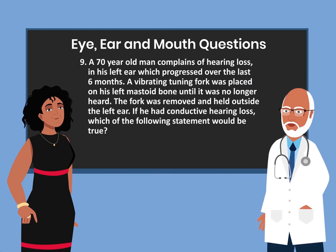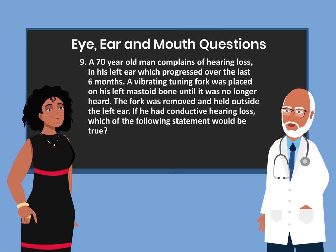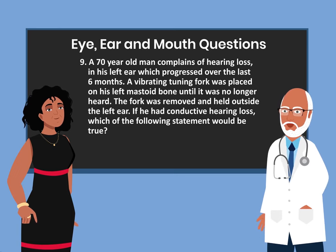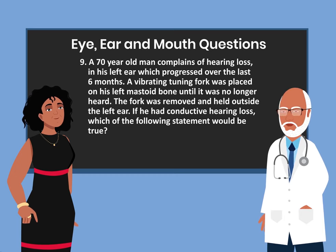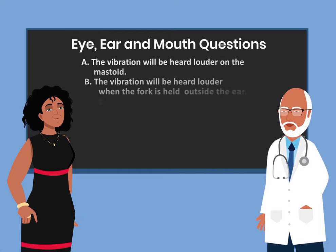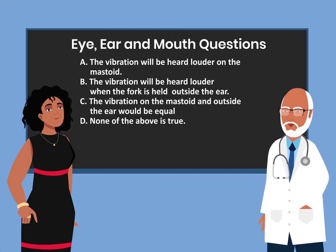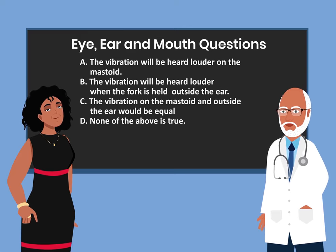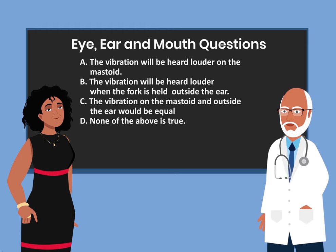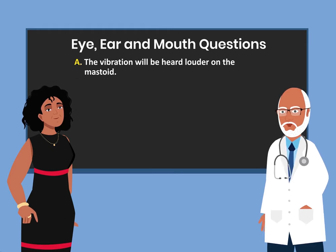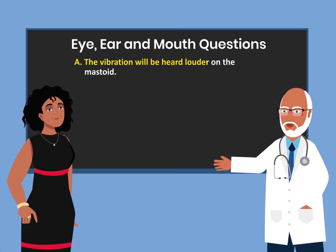Question 9. A 70-year-old man complains of hearing loss in his left ear which progressed over the last six months. A vibrating tuning fork was placed on his left mastoid bone until it was no longer heard. The fork was removed and held outside the left ear. If he had conductive hearing loss, which of the following statements would be true? A. The vibration will be heard louder on the mastoid. B. The vibration will be heard louder when the fork is held outside the ear. C. The vibration on the mastoid and outside the ear would be equal. D. None of the above is true. The answer is A. The vibration will be heard louder on the mastoid.